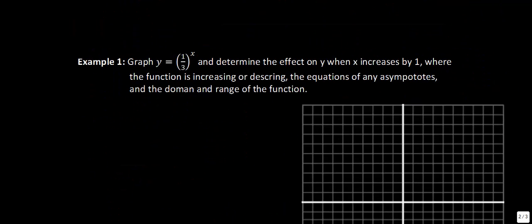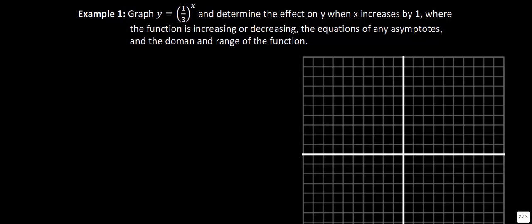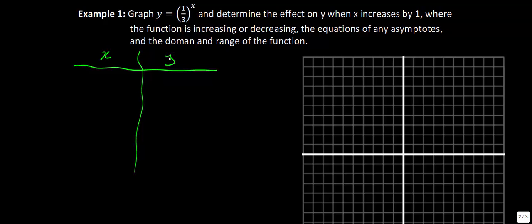Example 1: graph y equals one-third to the power of x, and determine the effect on y when x increases by 1, whether the function is increasing or decreasing, the equations of any asymptotes, and the domain and range. The first thing we'll do is make a table of values to see what this function looks like. We'll pick x values centered around the middle, starting at negative 2 and working to positive 2.